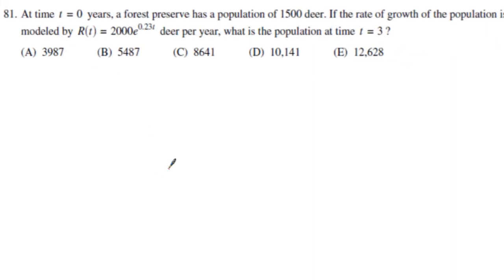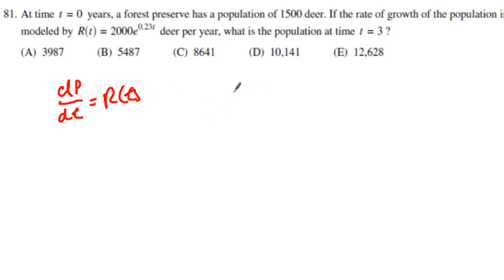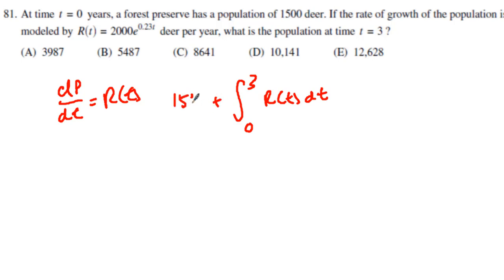Let's take a look at number 81 on the next exam. The rate of growth of population with respect to time is R(t). In our calculator we integrate R(t) from 0 to 3 years and add 1,500 because that's our starting population. We find the population goes up to about 10,141.